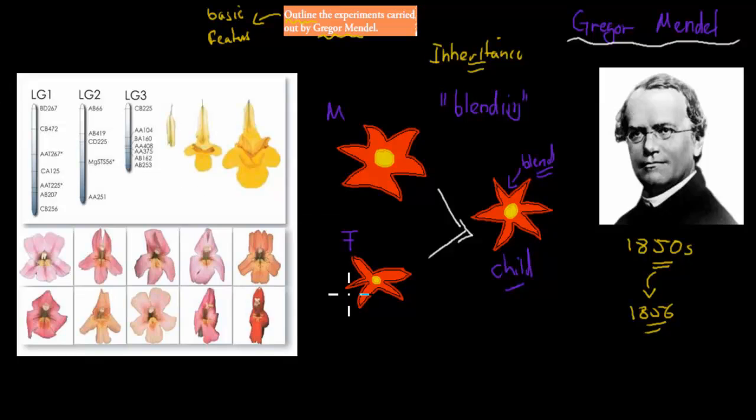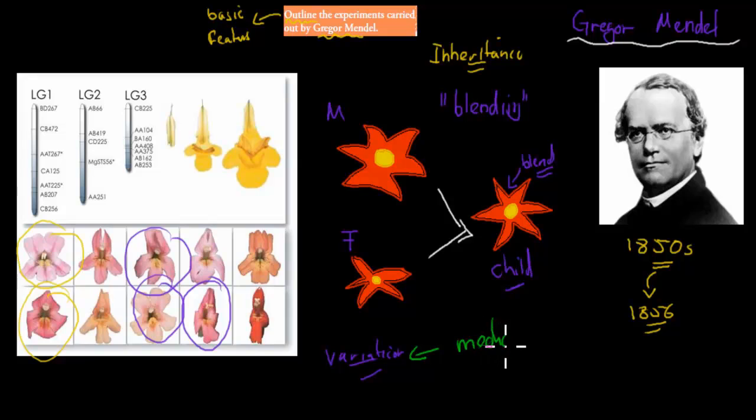Gregor Mendel wanted to test that. He wanted to see how variation works. Variation is just that every living thing is a bit different. For example, there might be some pink flowers, some darker pink flowers, some narrow or wide flowers. All that's possible. So variation existed, and Gregor Mendel wanted to figure out why does it exist. What is the mechanism behind this variation? That was his experiment. I'll go over the experiment now.